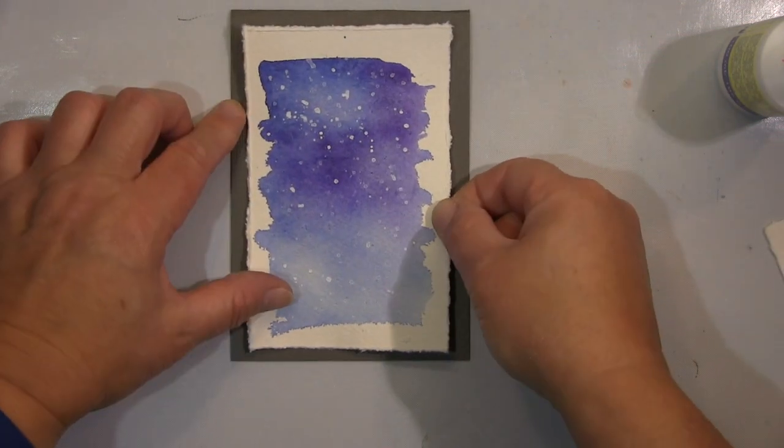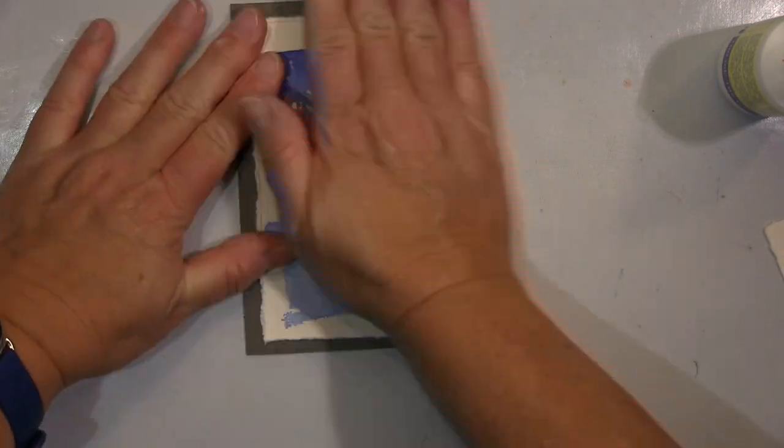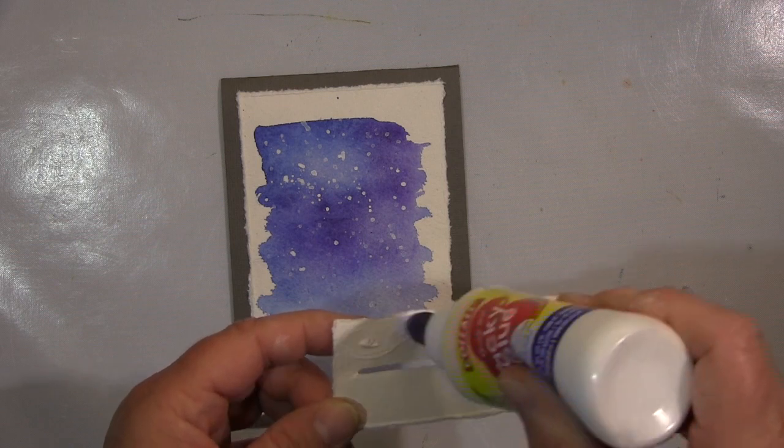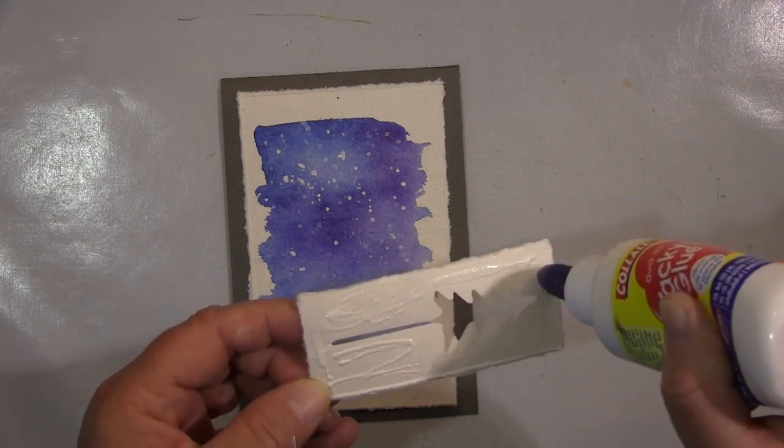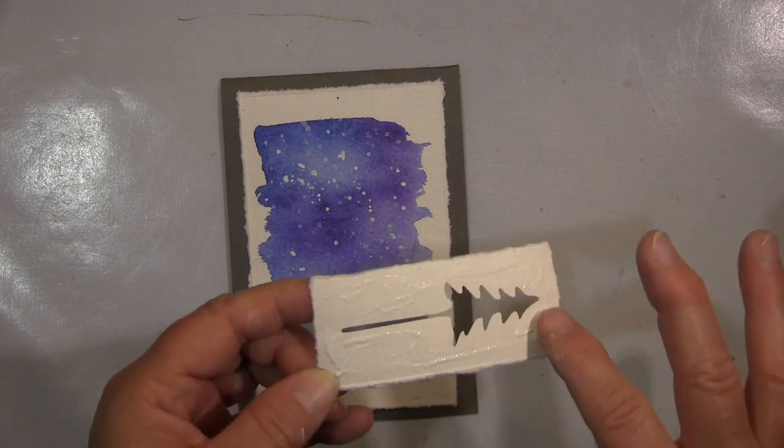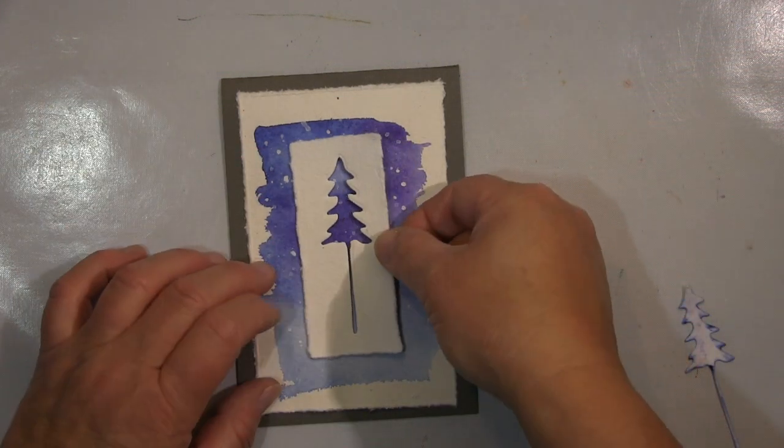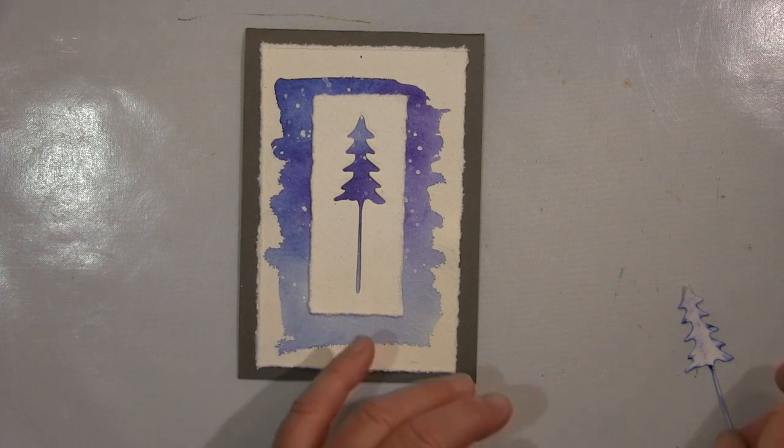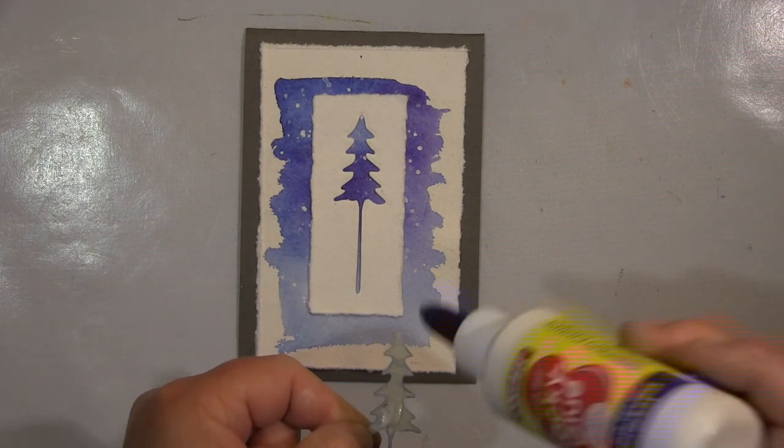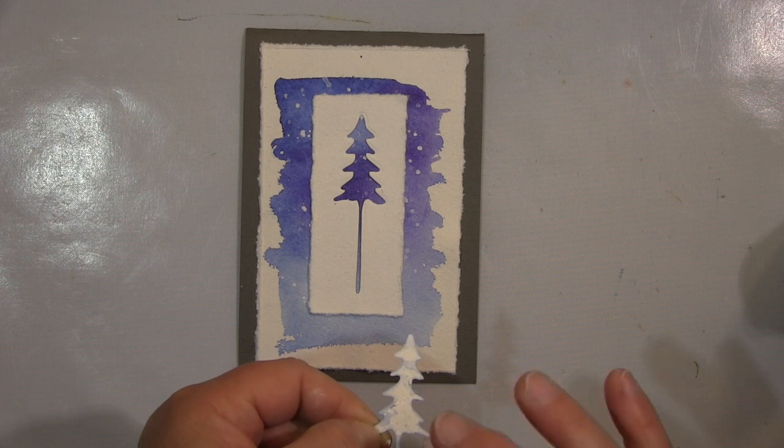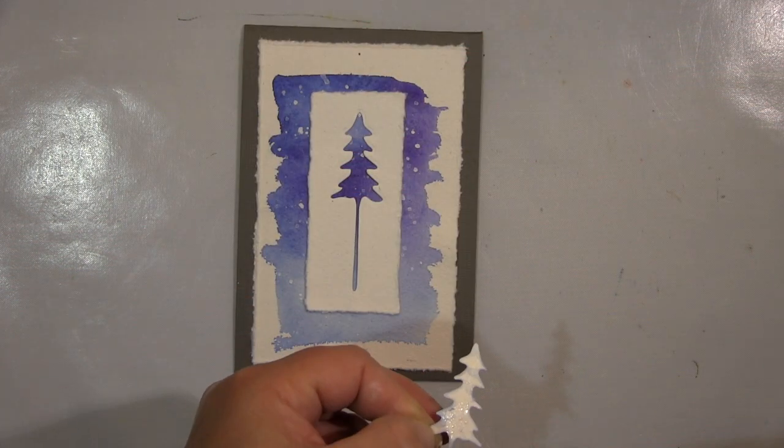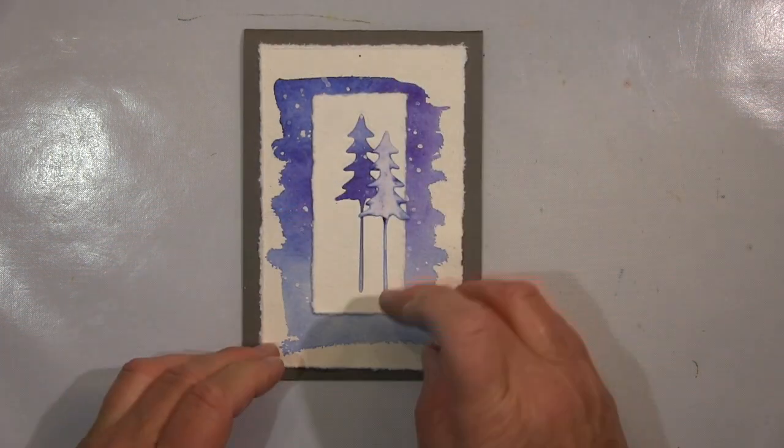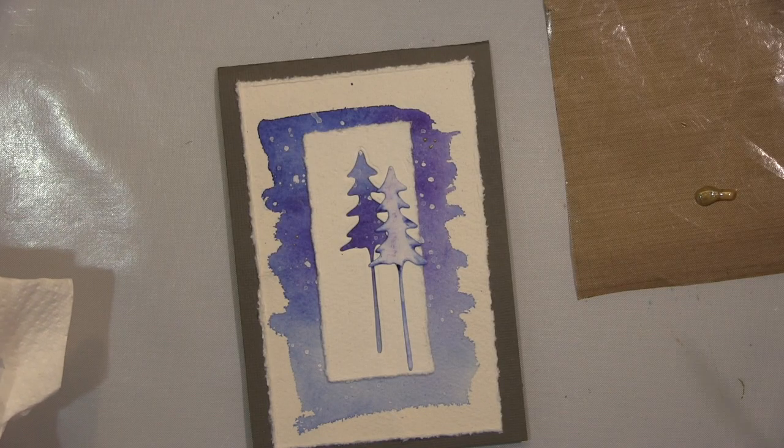Then the background is in this blue purple, then the topper, or no, it's not the topper topper, but this cutout stays in white, and then the tree in the same colors. So I have the background with the blue and the purple, the cutout here that stays white, and then I have the tree that's also in the background colors. And that's how I wanted it, so I made all three like that.